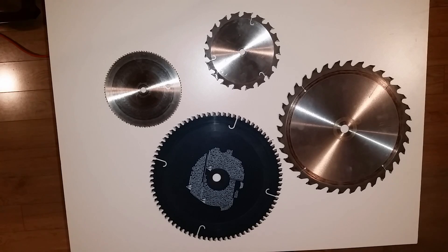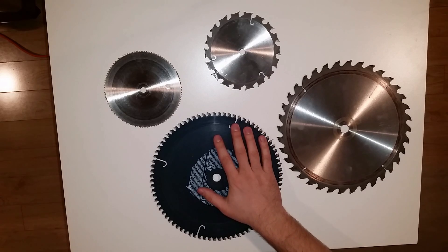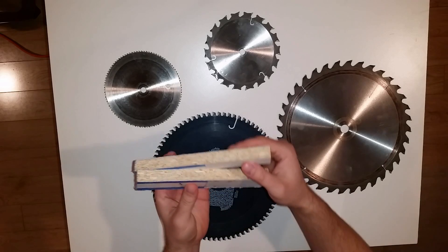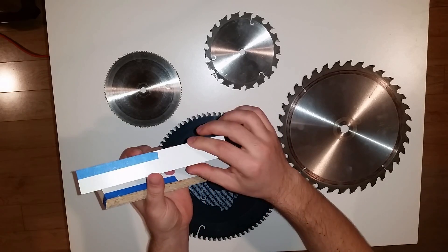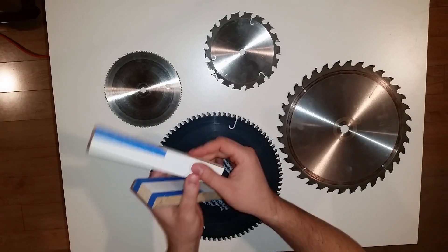So we're done cutting and there are clear differences between the types of blades used. If we look at the high quality specialty 80 tooth carbide tip blade, we can see that the edges are nearly perfect. They look almost like factory finish.